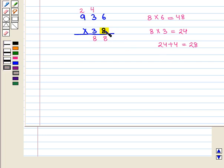Now 8 times 9 is 72, and 72 plus 2 is 74. So we write 74 and we get the number 7488.